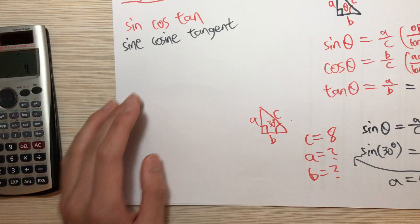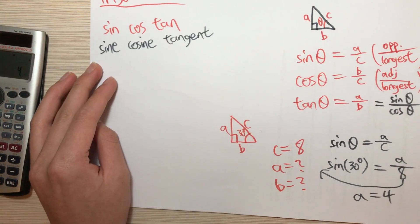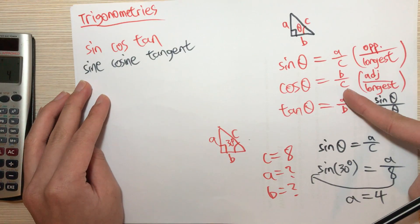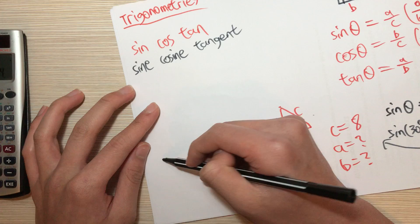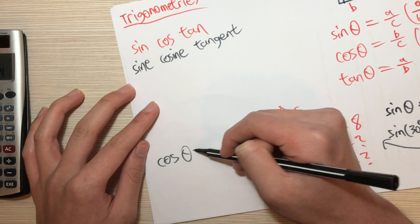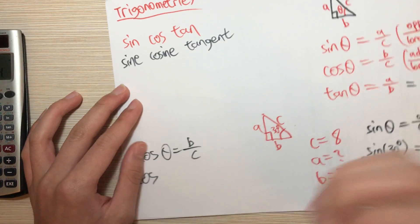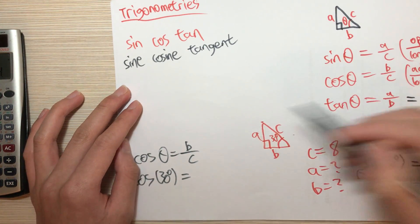What about B? How can we find out B? Now you can use cosine theta is actually equals to B over C. So cosine theta equals B over C, and then theta is just 30 degrees, and B is the unknown, and C is 8.